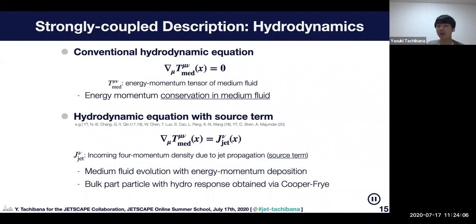This equation corresponds to energy momentum conservation in the medium fluid. But here we would like to have additional energy momentum deposition from the jet. We realize it by having source term. This is the hydrodynamic equation with source term used for simulation of medium evolution with jet energy momentum deposition. This J is the source term, the incoming four-momentum density due to jet propagation. This is the source term profile we generate with causal diffusion model.